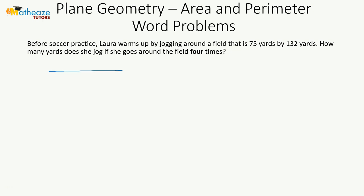How many yards does she jog if she goes around the field four times? We have a rectangular field—132 yards by 75 yards. She jogs around the field, so in this case we have the case of a perimeter.